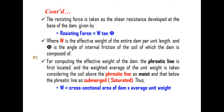The resisting force is taken as the shear resistance developed at the base of the dam. Therefore, the resisting force equals W tan phi, where phi is the angle of internal friction and W is the effective weight of the entire dam per unit length.